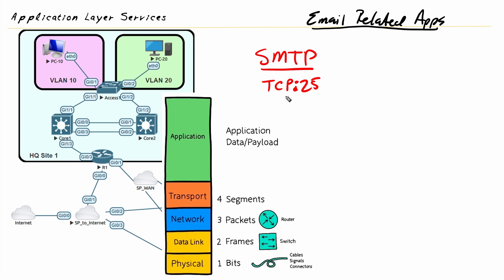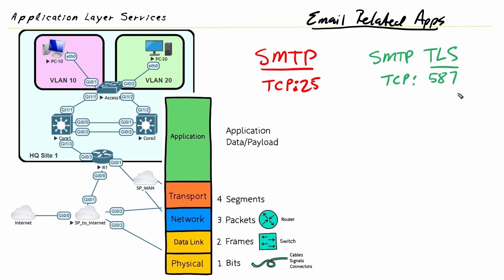Because we want to do things securely, instead of using the insecure flavor of SMTP, we can use SMTP TLS. TLS stands for Transport Layer Security — the same transport layer security we use with HTTPS. We can also use it with Simple Mail Transfer Protocol, and the default port for that is TCP 587.